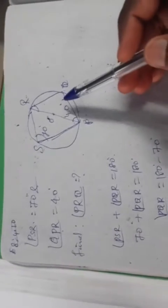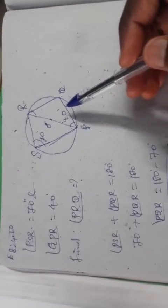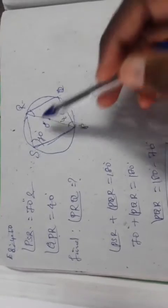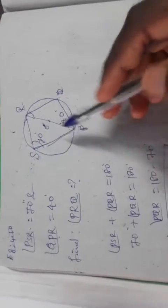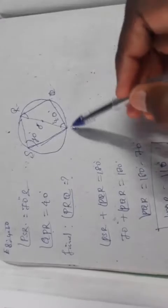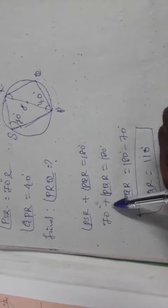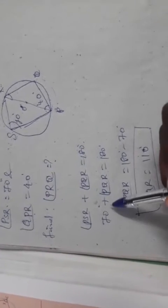Next, we want to find angle PRQ. We know Theorem 12: opposite angles of a cyclic quadrilateral are supplementary. So angle PSR plus angle PQR equals 180. Substituting, 70 plus angle PQR equals 180, so angle PQR equals 180 minus 70, which gives 110 degrees.